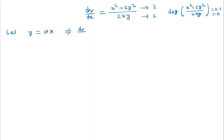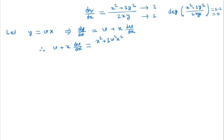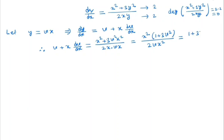Then by differentiating, we have dy/dx equal to v plus x times dv/dx. By substituting this, we have v plus x dv/dx equal to x squared plus 3v²x² by 2x times vx. Taking x squared as common, we get 1 plus 3v squared by 2v.